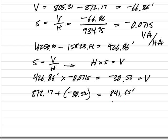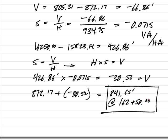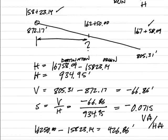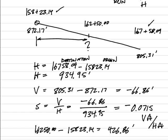So that is the elevation at 162 plus 50.00. The key here is simply remembering to use the simple relationship of slope that you learned in junior high.